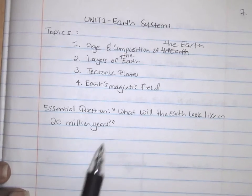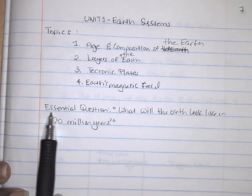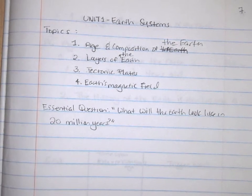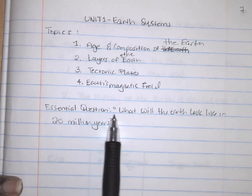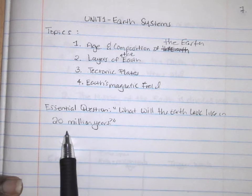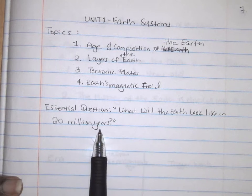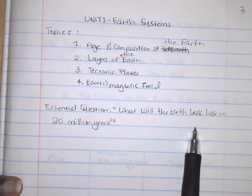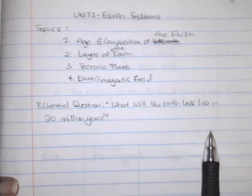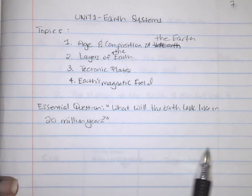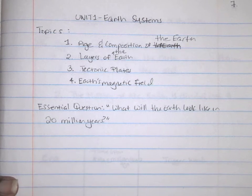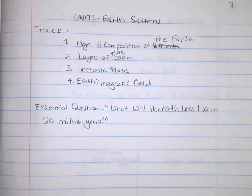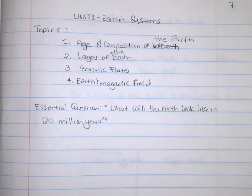Next, we're going to write the essential question — this is the question you'll be answering for this unit. The essential question is: 'What will the earth look like in 20 million years?' Write this question down. You don't need to answer it here; leave the rest of the space blank. If you need more time for the Unit One title page, pause the video.